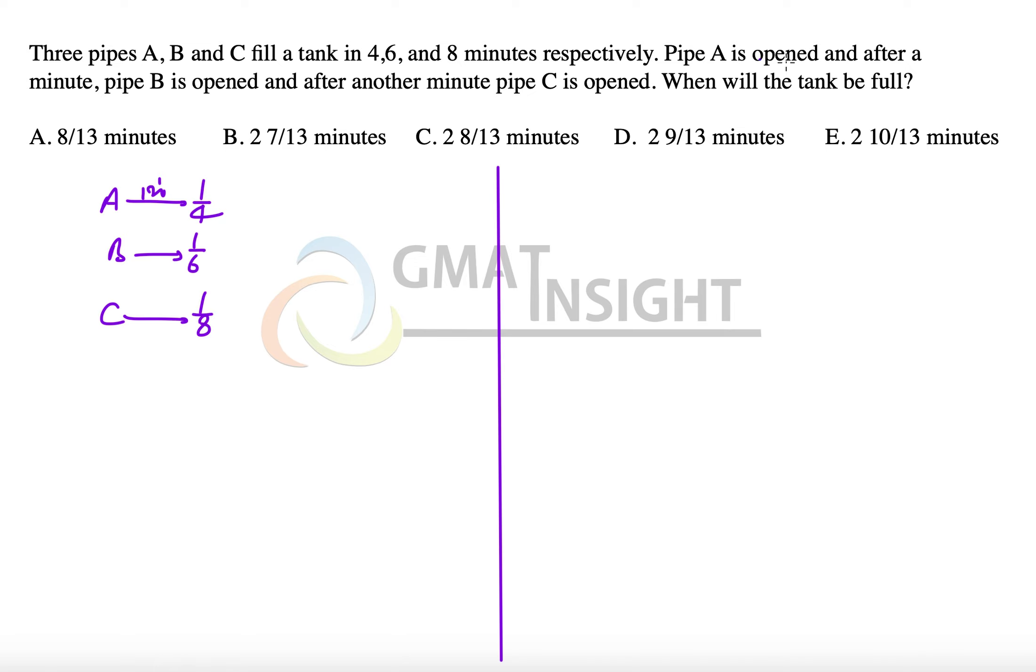Now pipe A is opened first. That means in the first one minute, 1/4 work is done. Now the remaining work is equal to 1 minus 1/4, that is equal to 3/4 of the work.